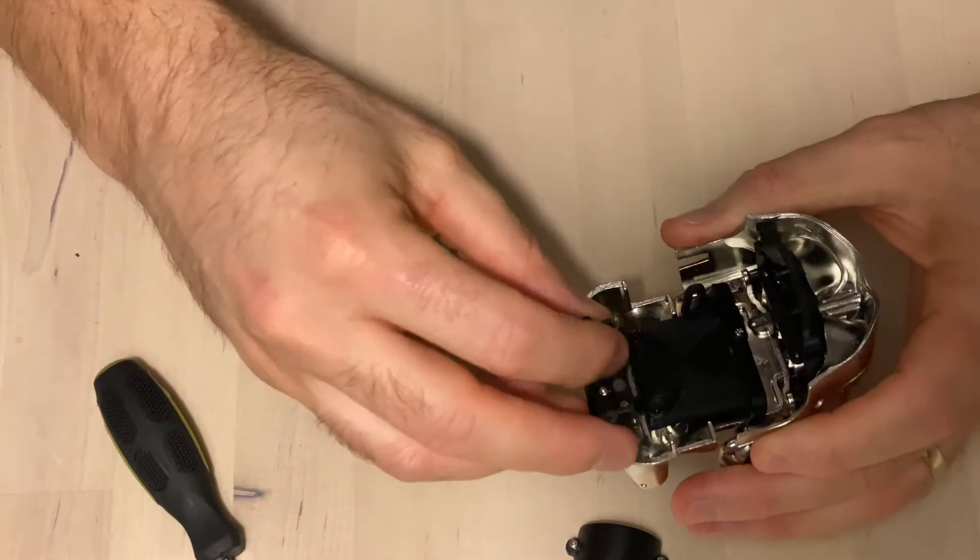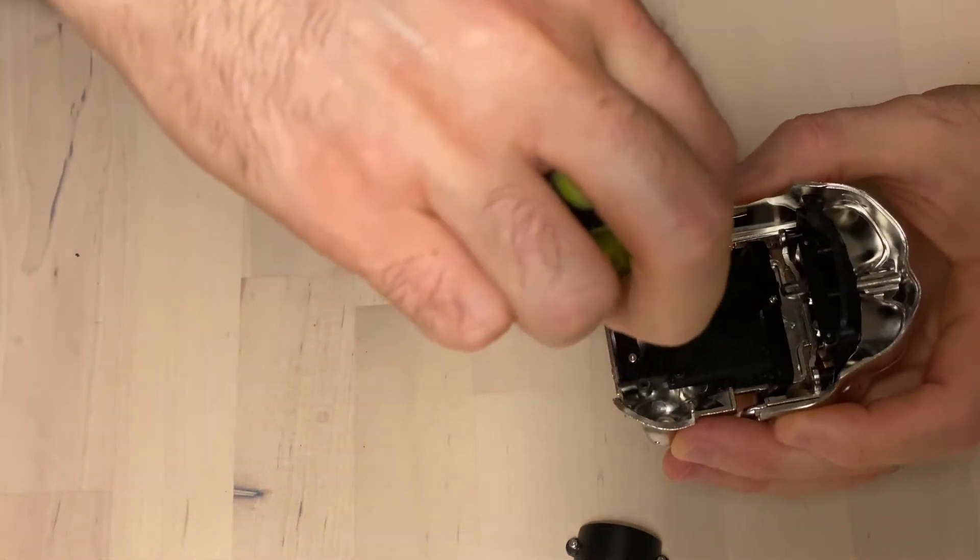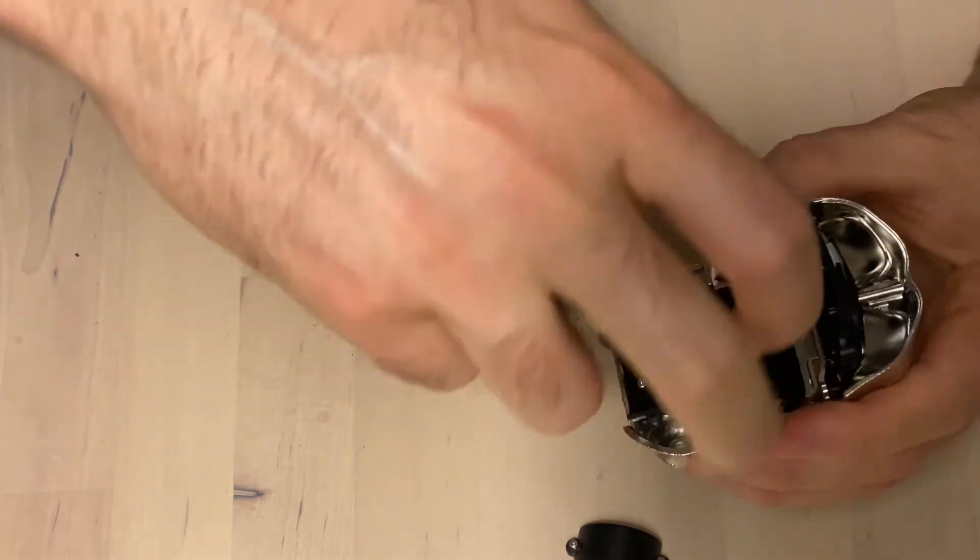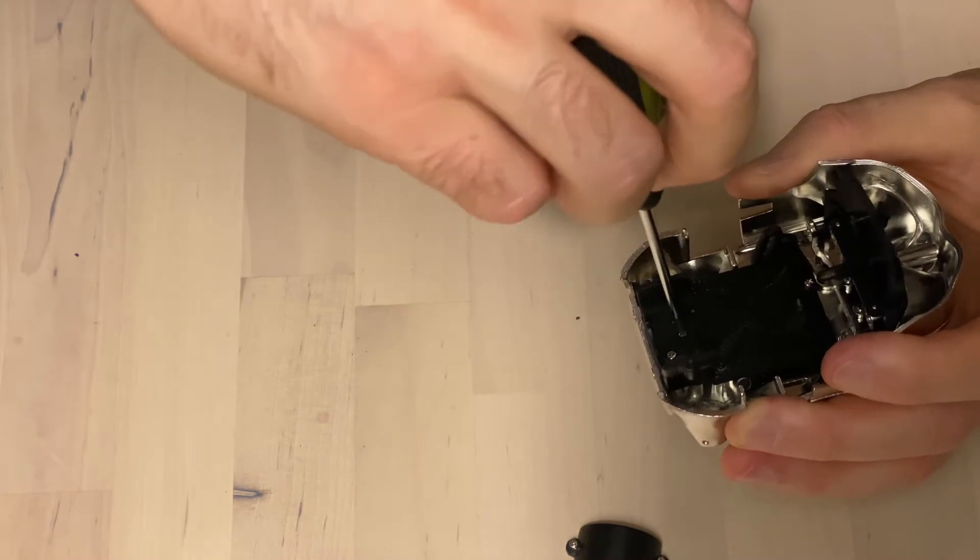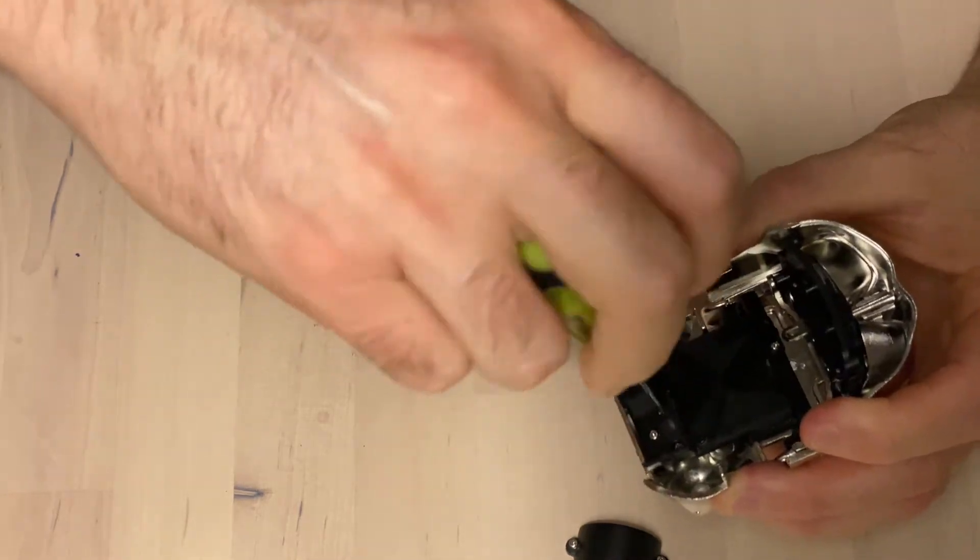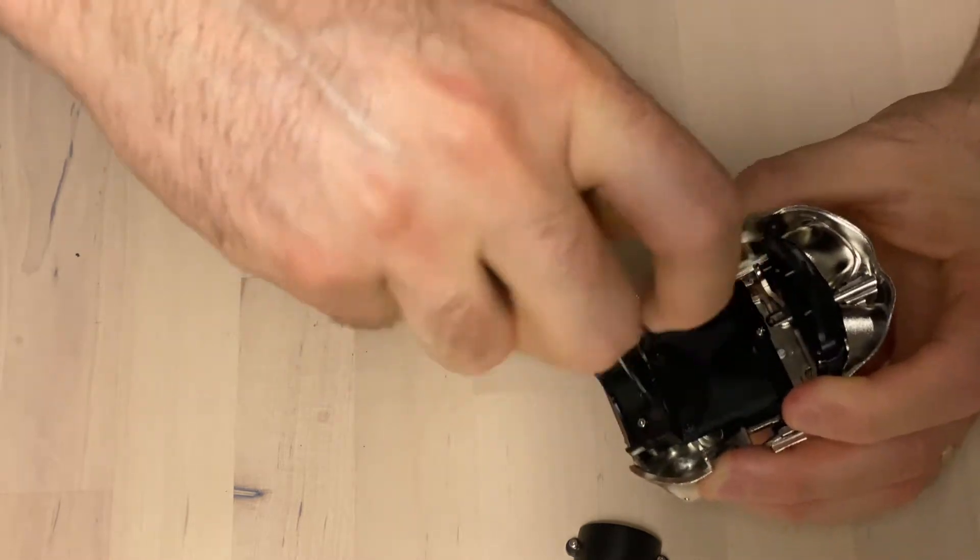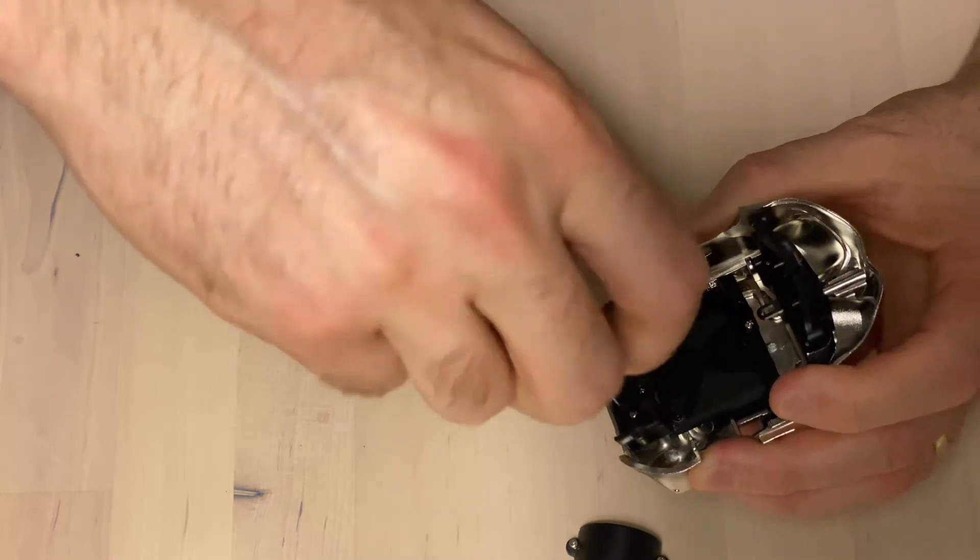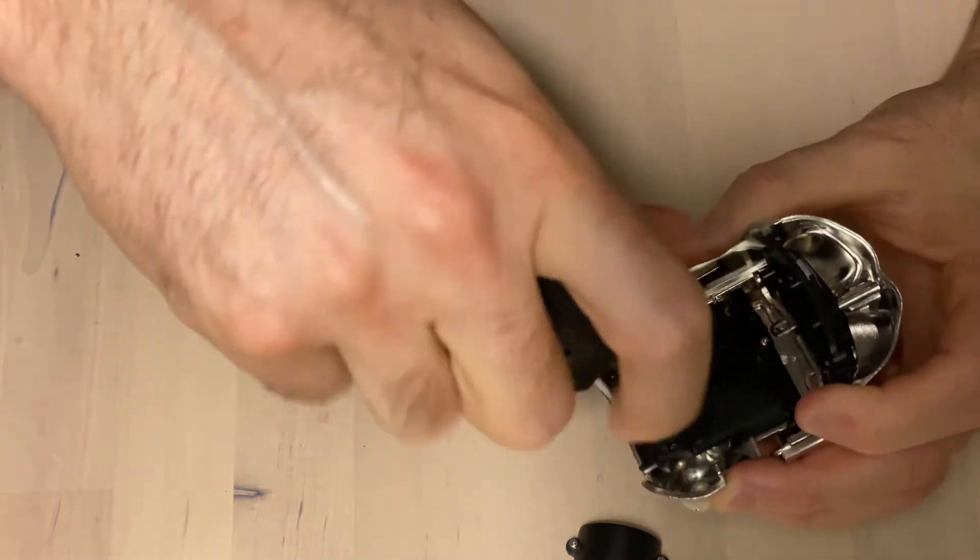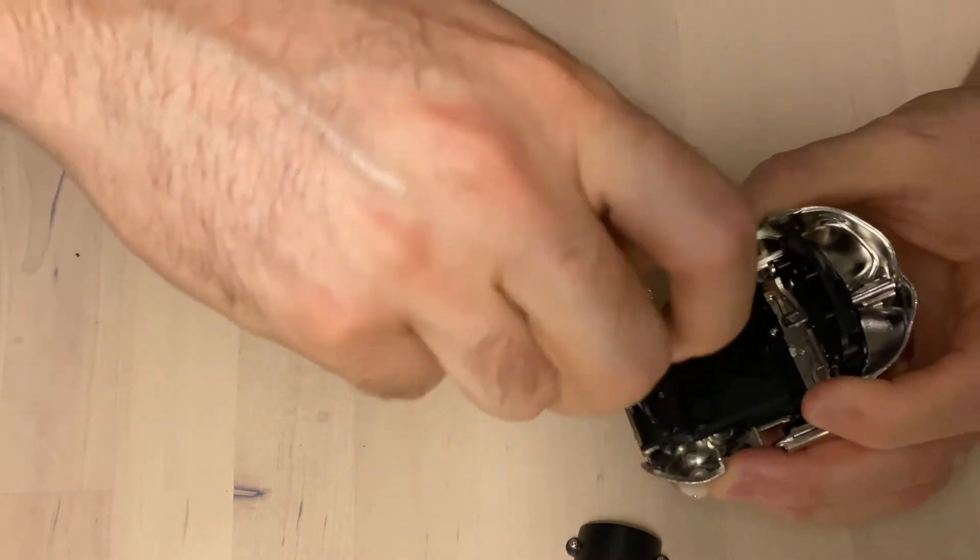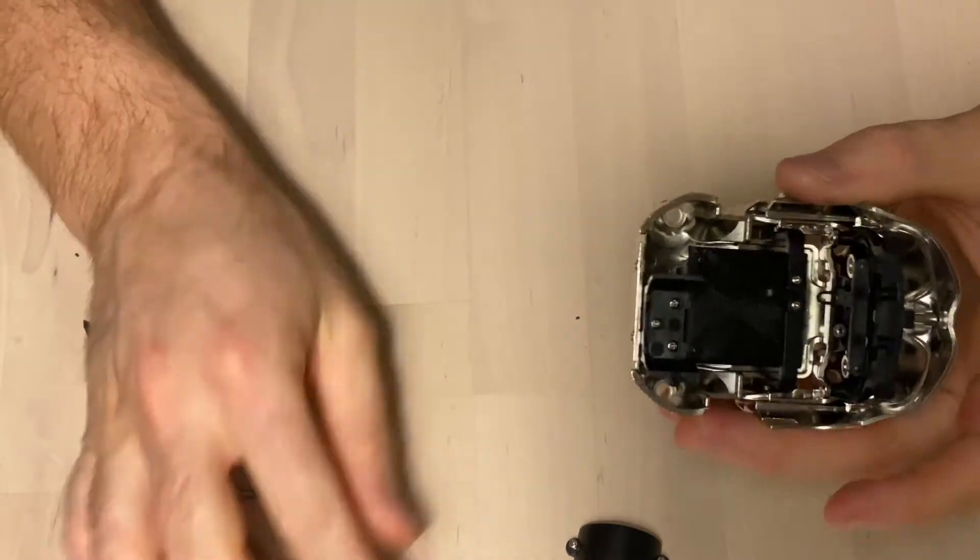And that gives you that exposed part underneath there. Then we need to just pop this back on in the same place that it came off. Because we're going to need this to mount the new servo. Basically we swapped the stepper motor for a servo. Why they put a stepper motor in there, I do not know. Because nobody opens their mouth that slowly. Not even a robot. So that goes in there.